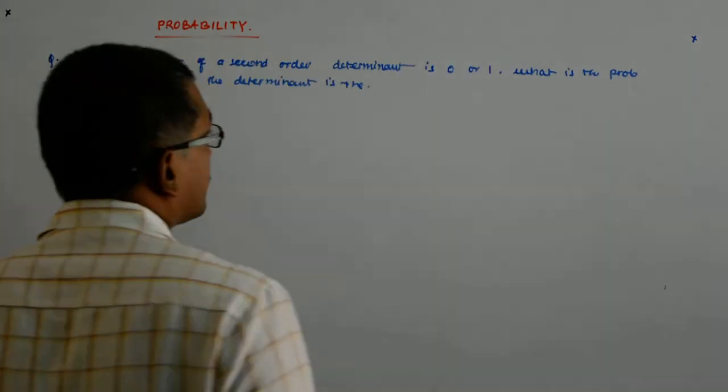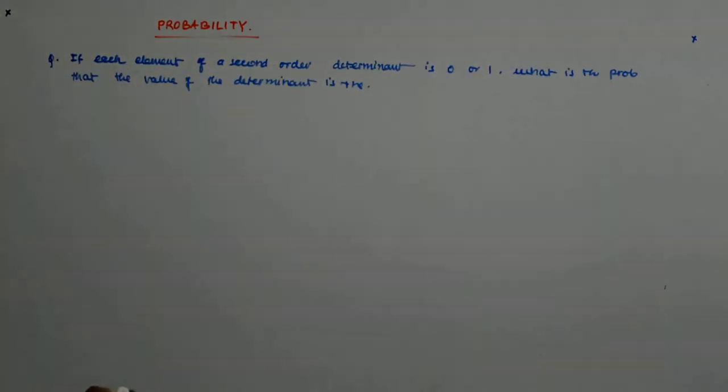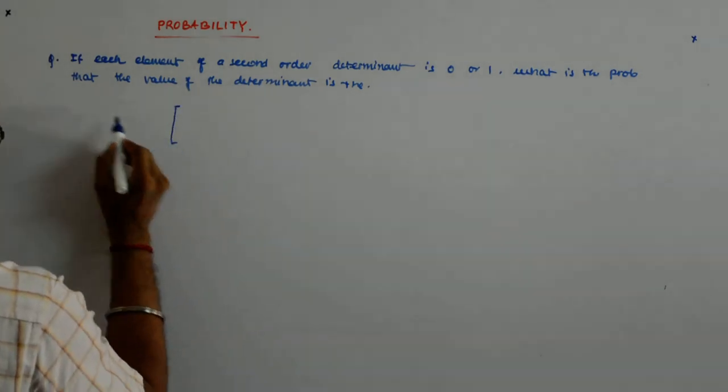If each element of a second-order determinant is 0 or 1, what is the probability that the value of the determinant is positive? Look, if it's a second-order determinant, then it is something like this.